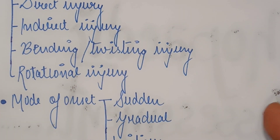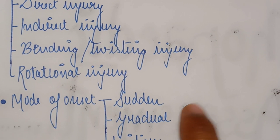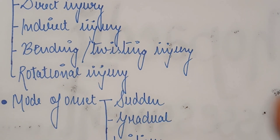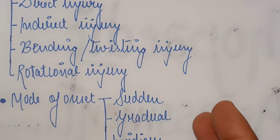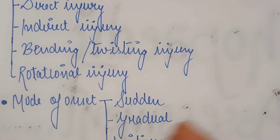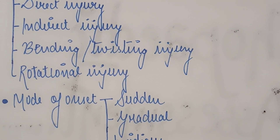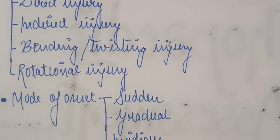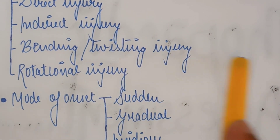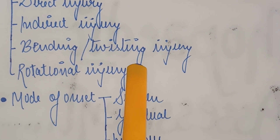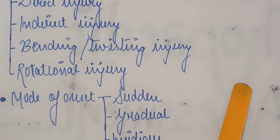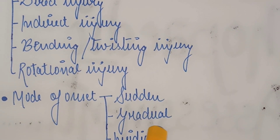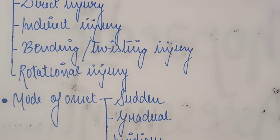So the date when the pain was onset, and how the pain occurred — now the mode of onset. We start with the date of onset, the second is the mechanism of injury, and the third is the mode of onset.